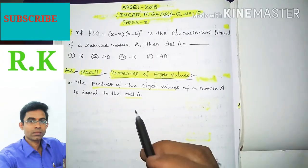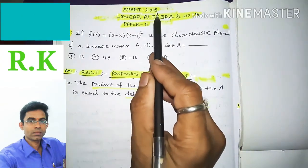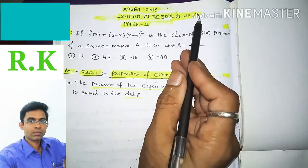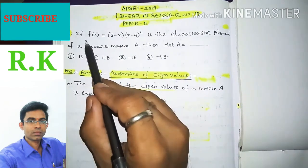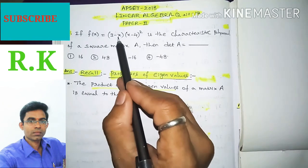Hi everyone, this is Ram Krishna. Welcome to my channel. In this video, I am going to discuss APSET 2018 Linear Algebra question number 17 from Paper 2. The question is: if f(x) = (3 - x)(x - 4)² is the characteristic polynomial of a square matrix A, then det A equals...